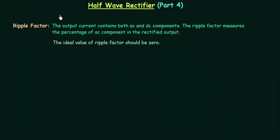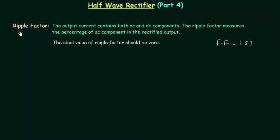In the previous lecture I explained the form factor and we obtained the form factor for half wave rectifier — in case of half wave rectifier, the form factor is equal to 1.57. In this lecture I will explain ripple factor, find out the general expression for ripple factor, and by using it we will calculate the ripple factor for half wave rectifier.